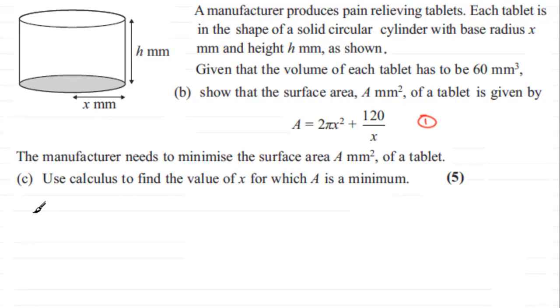So let's just write that down here that A equals 2πx² plus 120 multiplied by x to the power minus 1.